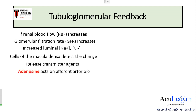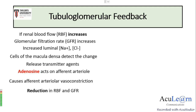The macula densa releases transmitter agents, one of which is adenosine. Adenosine acts on the afferent arteriole, causing afferent arteriolar vasoconstriction. This reduces renal blood flow and the glomerular filtration rate, restoring them to normal levels.